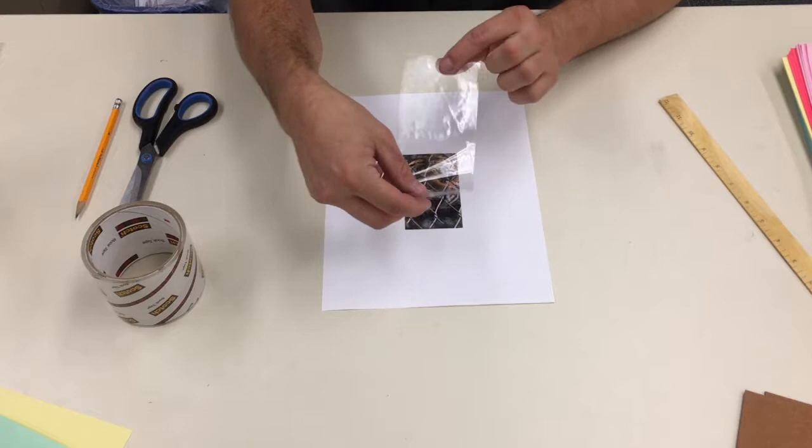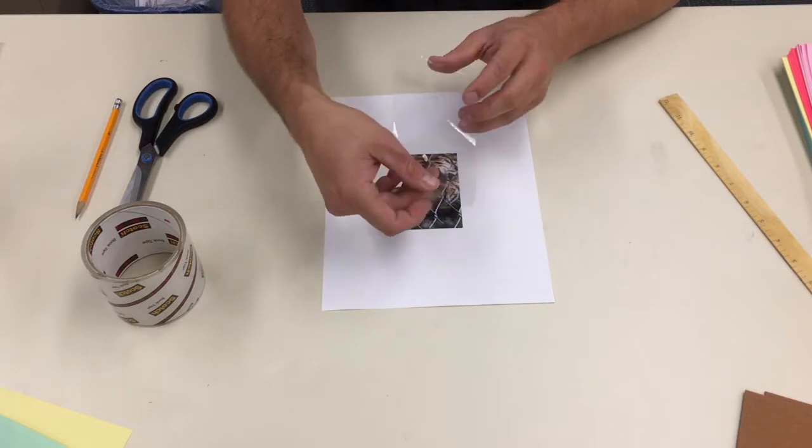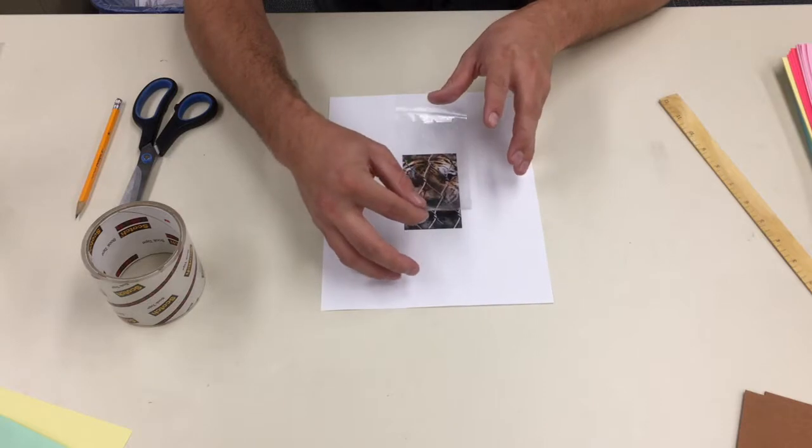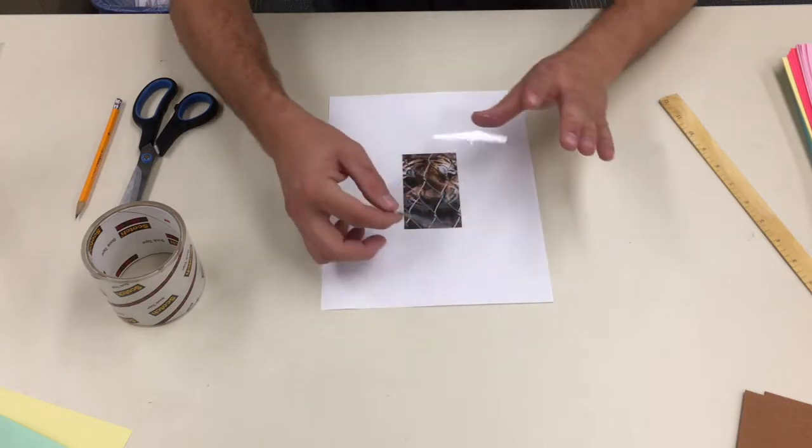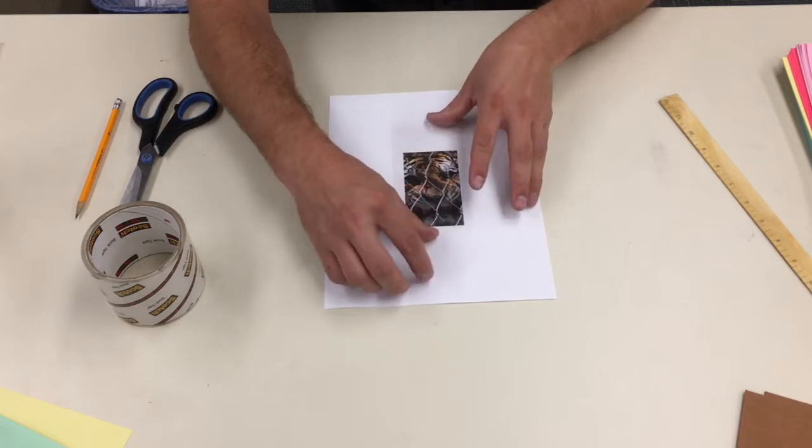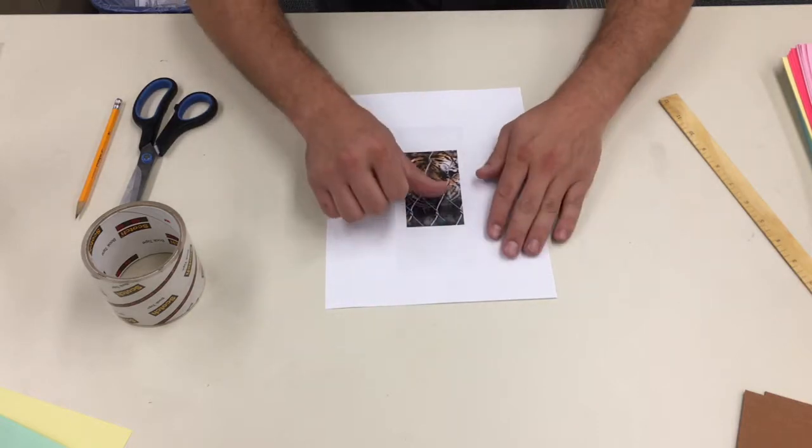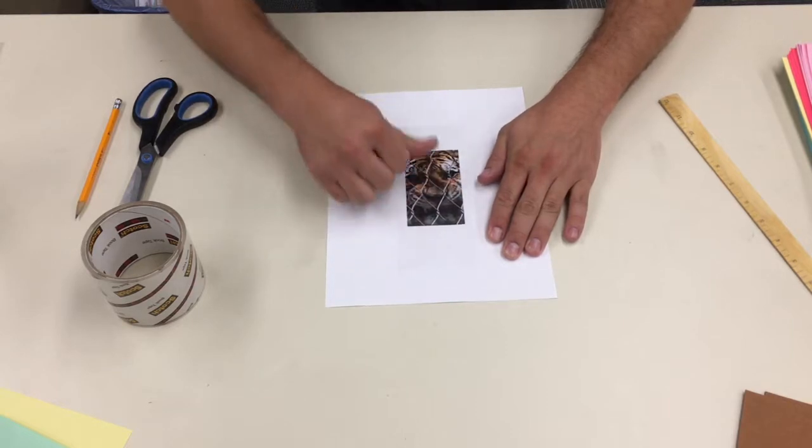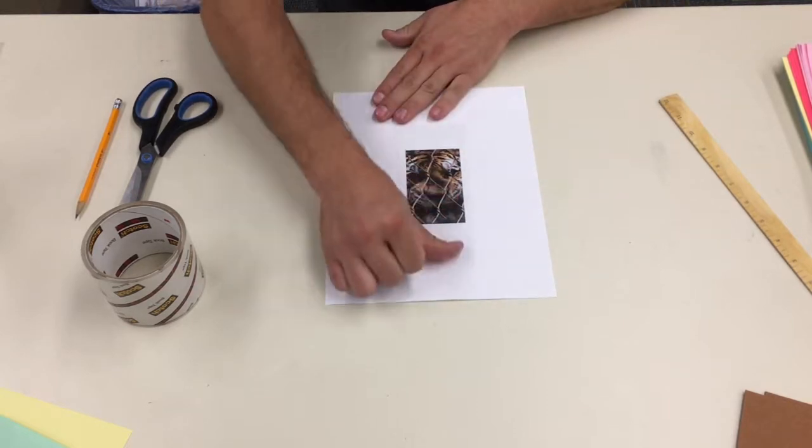When I set this down I don't want it to accidentally stick in different areas creating bubbles and things like that, so I start like this, make sure that it's lined up vertical with my tiger, or whatever image you have. I set it down, I start in the middle, pressing to the outer edges.